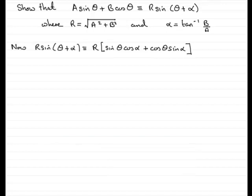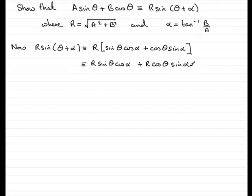I'll just remove this identity as we progress down to give us room. All I want to do now is expand the bracket, so we get r sin θ cos α, plus r cos θ sin α. Next, I want to rearrange this: the first term becomes r cos α sin θ, and the second term becomes r sin α cos θ.